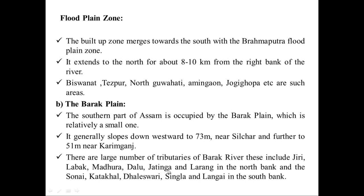Next is the flat plain zone. The built-up zone merges towards the south into the Brahmaputra flat plain zone. The flat plain zones are adjacent to the river and very near to the Brahmaputra River. It extends to the north about 8 to 10 kilometers on the right bank of the river.